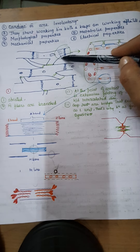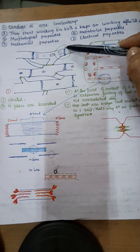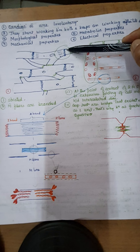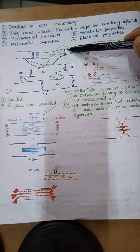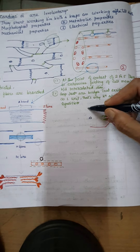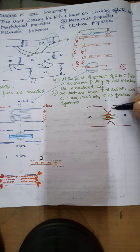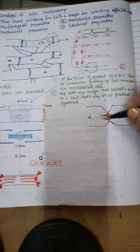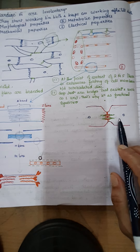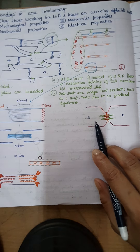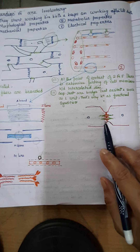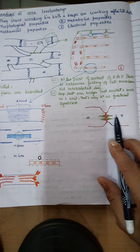Another property: the sarcolemma that covers the muscle fibers gets extremely folded between two muscle fibers, and this is known as a gap junction. When we see this gap junction closely, one muscle fiber and another muscle fiber are separated by the sarcolemma which folds between them. These gaps — the gap junctions — make bridges between the two cells, and because of these gap junctions, the excitation wave passes quickly to the other cells.